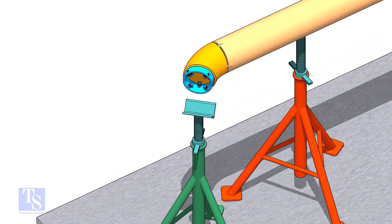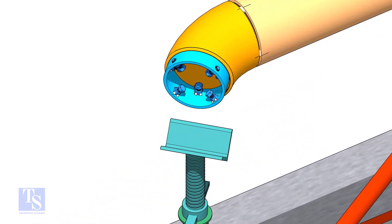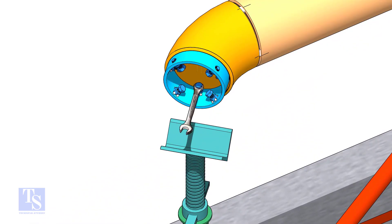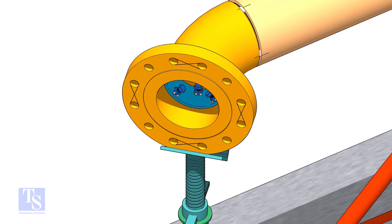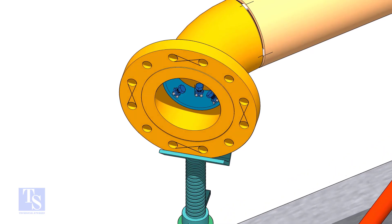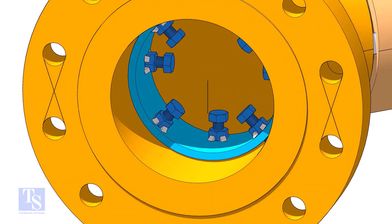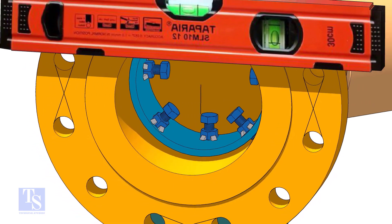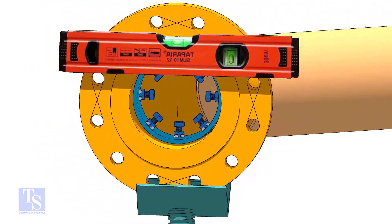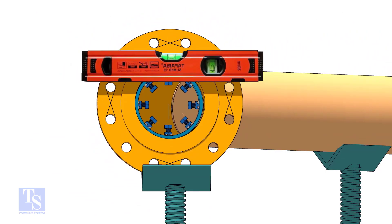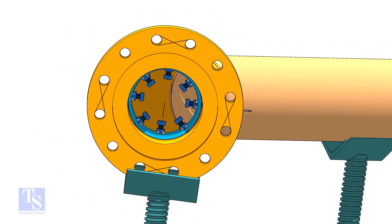Put the clamp in the elbow and tighten lightly. Put the flange in its position and maintain the level. Tighten the clamp bolts lightly. Check the gap and the overlap.